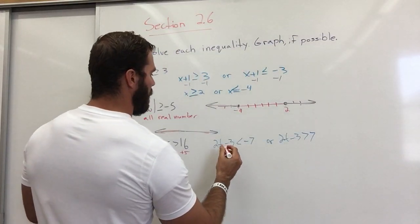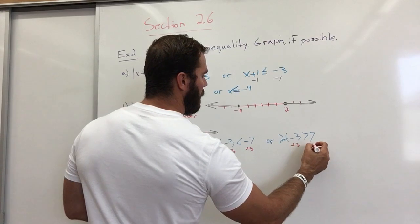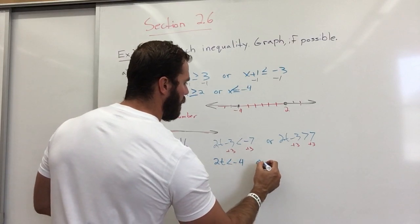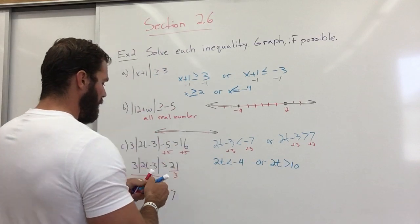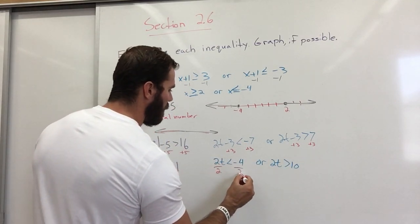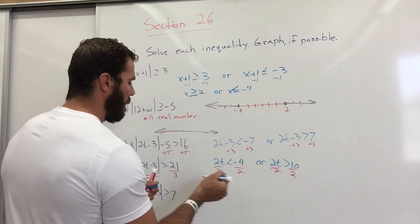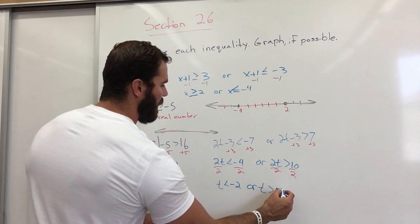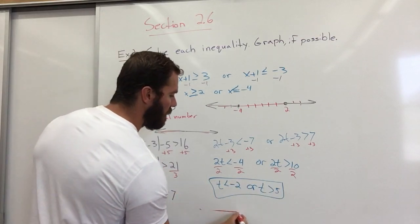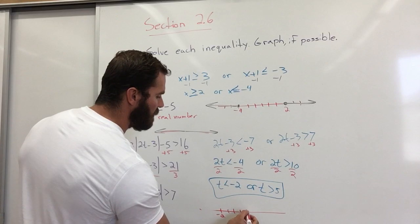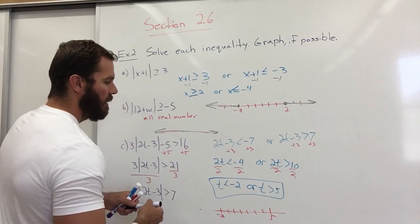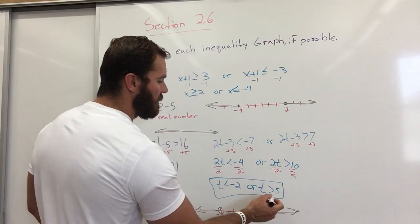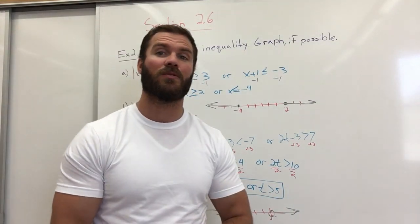Now there's just one more thing to do. T is less than negative 2, or T is greater than 5. You would graph that: negative 2, negative 1, 0, 1, 2, 3, 4, 5. T is less than negative 2, so open circle, arrow to the left. Open circle on the 5, arrow to the right because it's greater than. Okay, I hope that wasn't too rushed. You can always pause and rewind.